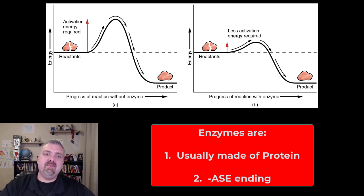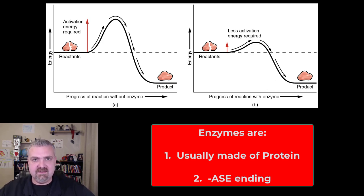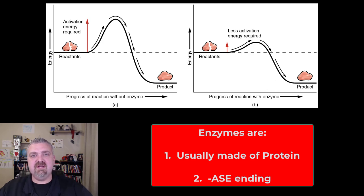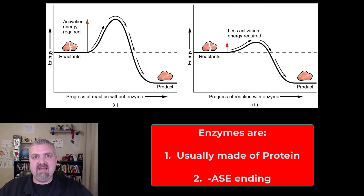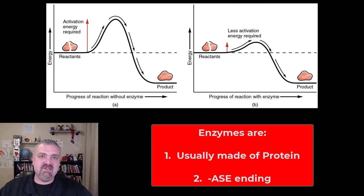So first, a couple of things. Most enzymes are made of proteins. There are ribozymes and enzymes made of other things, but the huge majority of enzymes are made of protein. Usually you can tell an enzyme by its name — it will end in -ase, A-S-E.